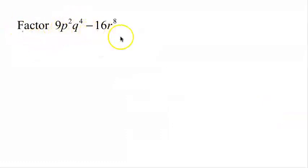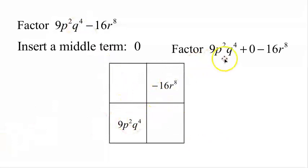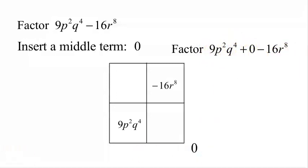The next example is 9p squared q to the 4th minus 16r to the 8th. A little more complicated, but our process will be the same. We draw a box, put the first term 9p squared q to the 4th in the lower left-hand corner, and the last term negative 16r to the 8th in the upper right-hand corner. There is no middle term, so we call the middle term 0. The problem becomes 9p squared q to the 4th plus 0 minus 16r to the 8th.